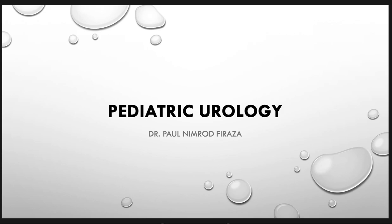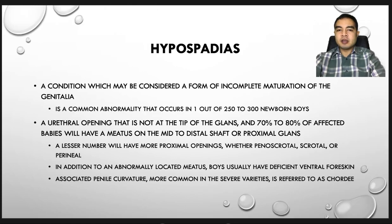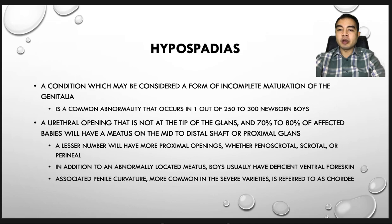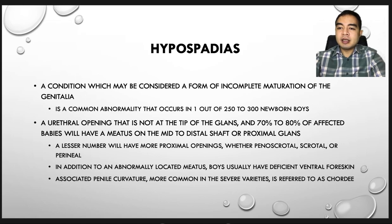Good afternoon. Our next lecture for the day is about pediatric urology. The first condition we will be discussing is hypospadias. It is a condition which may be considered a form of incomplete maturation of the genitalia. It's a common abnormality that occurs in 1 out of 250 to 300 newborn boys in the US. The most obvious aspect of hypospadias is a urethral opening that is not at the tip of the glans.